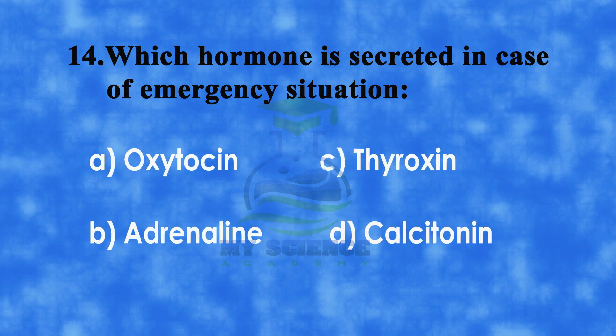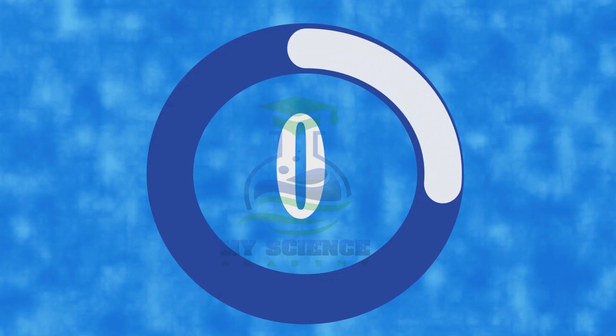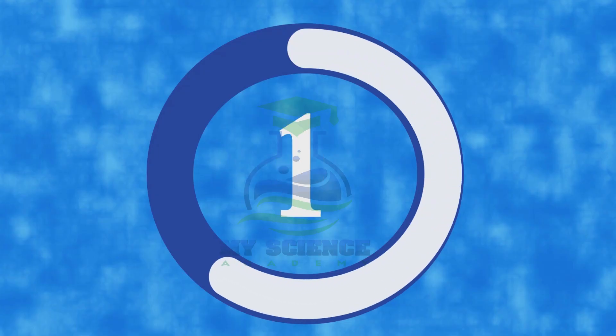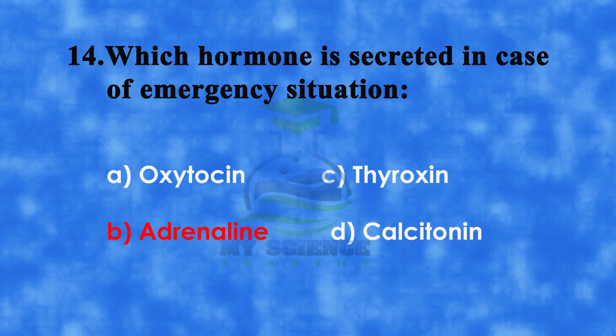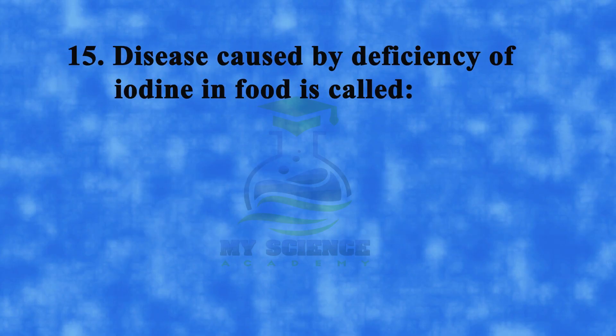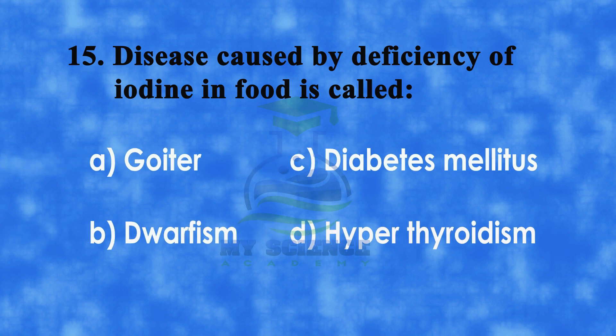Number 14: Which hormone is secreted in case of emergency situation. A: oxytocin, B: adrenaline, C: thyroxine, or D: calcitonin. And correct answer is B: adrenaline.